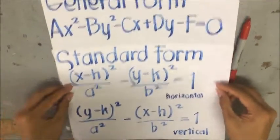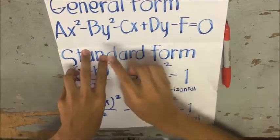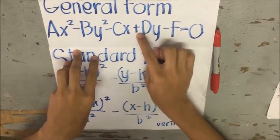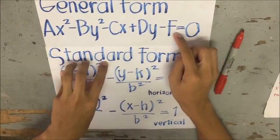First of all, the general form of a hyperbola is written as this: Ax squared minus by squared minus cx plus dy minus f equals 0.